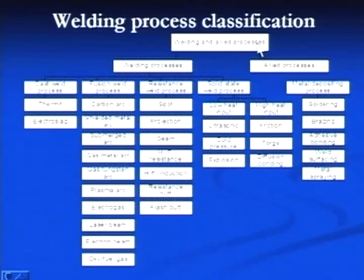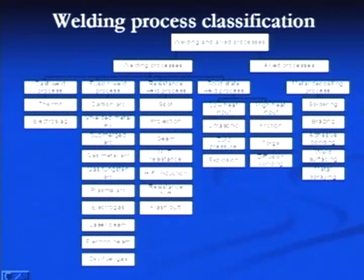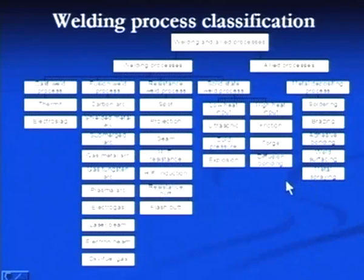Welding process classification can also be based on welding and allied processes. Welding processes are those in which a joint is produced, while allied processes are those in which either a joint is produced or some sort of layer at the surface of the component is developed. Based on this criteria, we will see how processes can be classified.